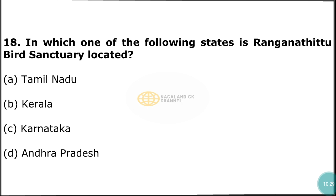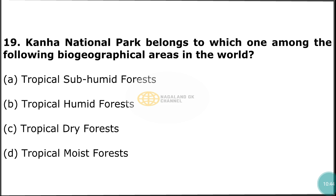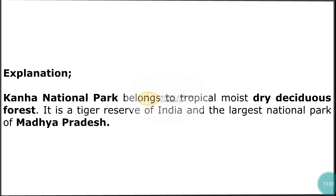Question number 18: In which one of the following states is Ranganathittu Bird Sanctuary located? The correct answer is option C — Karnataka. Question number 19: The correct answer is option C — Tropical Dry Forest. Kanha National Park belongs to Tropical Moist Dry Deciduous Forest. It is a tiger reserve of India and the largest national park of Madhya Pradesh.